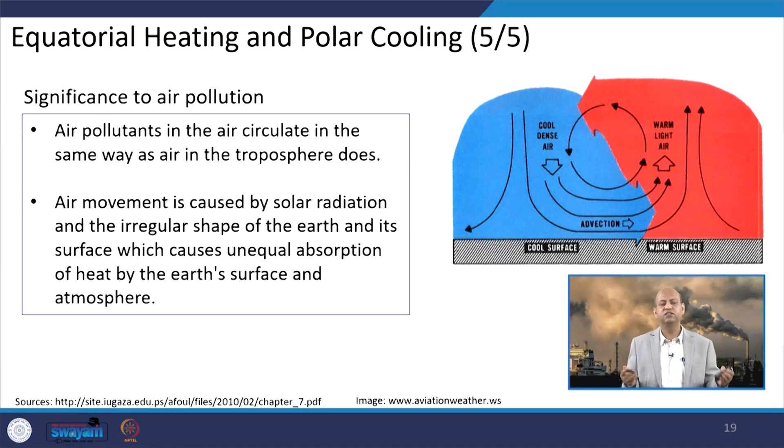In surface heat flux, large quantities of radiation energy are transferred into the earth's tropical oceans. The energy enters these water bodies at the surface when absorbed radiation is converted into heat energy, and the horizontal transfer of this heat from equator to poles is accomplished by ocean currents. The significance for air pollution is that air pollutants circulate in the same way as these circulation winds occur between tropical areas and the poles.